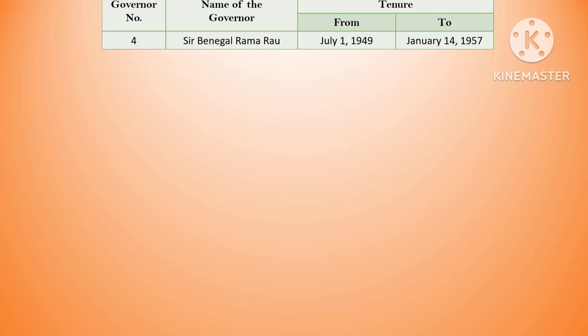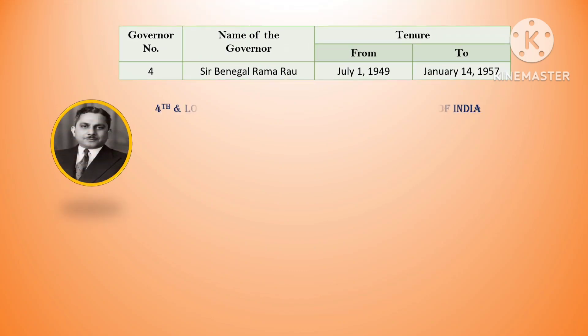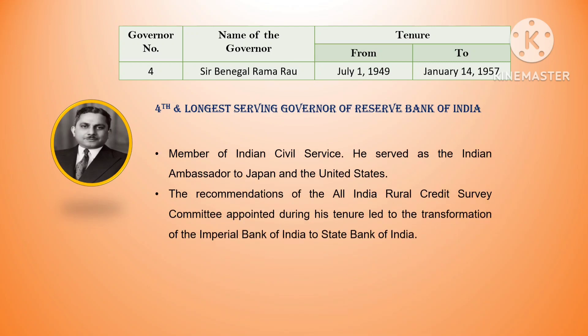The fourth governor was Sir Benegal Rama Rao, and he was the longest serving governor of the Reserve Bank of India. His tenure was from July 1, 1949 till January 14, 1957. He was a member of the Indian Civil Service and served as the Indian ambassador to Japan and also to the US. During his tenure, an All India Rural Credit Survey Committee was appointed, and recommendations made by the committee led to the transformation of the Imperial Bank of India to the State Bank of India.